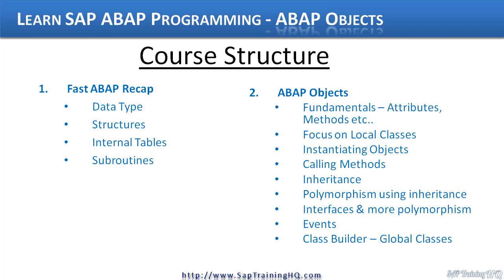In the ABAP recap, we're going to cover data types — how we create data types ourselves, how we use the standard data types in the system, how we can create structures using data types, and how we use internal tables based on structures. Then we'll look at some of the subroutine functionality and how we modularize code in standard procedural ABAP, going through those basic building blocks of ABAP.